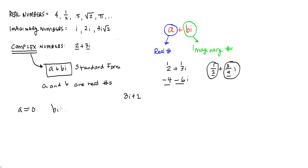I should also point out to you that when a equals 0, what do I get? I have just the bi portion. So when a equals 0, like 2i, 5i, negative 6i, that gives us our pure imaginary number.